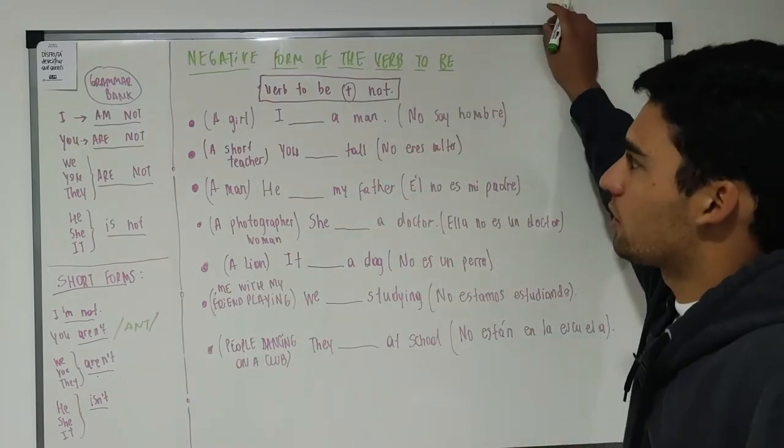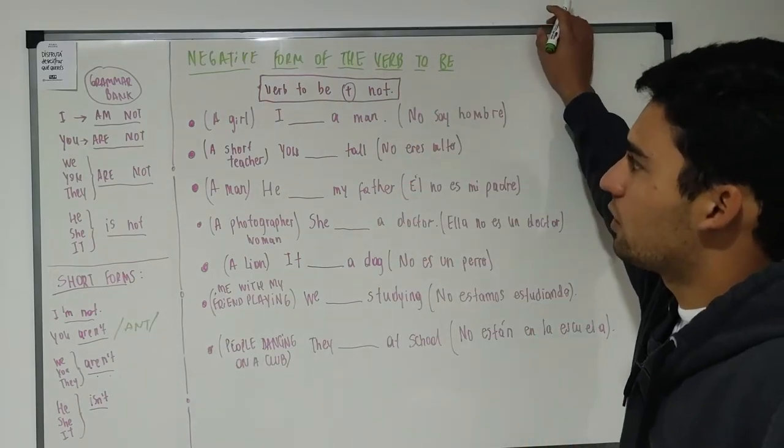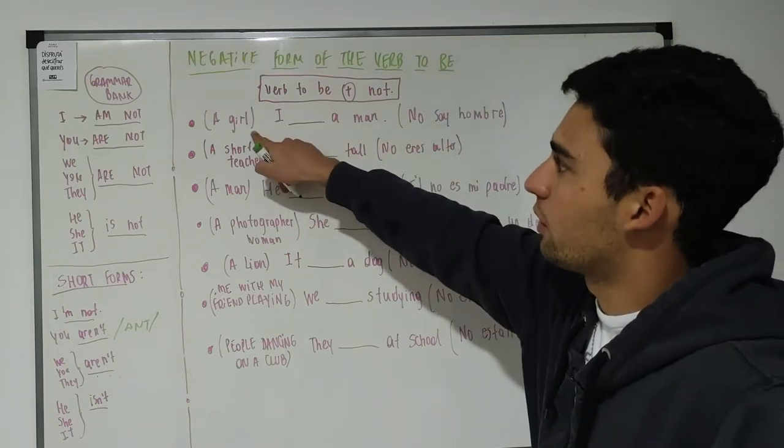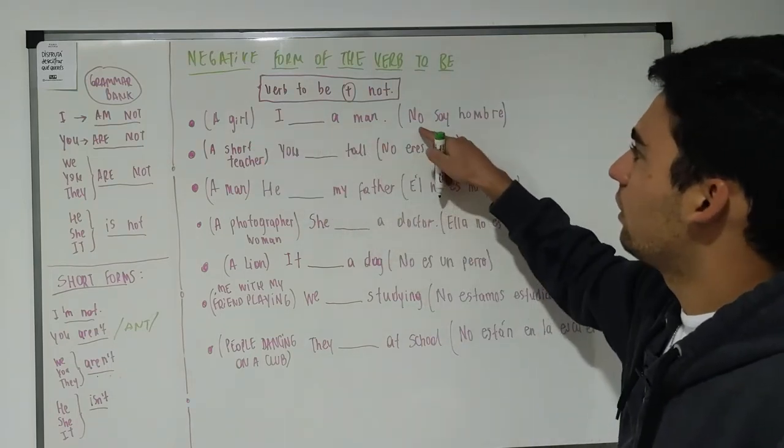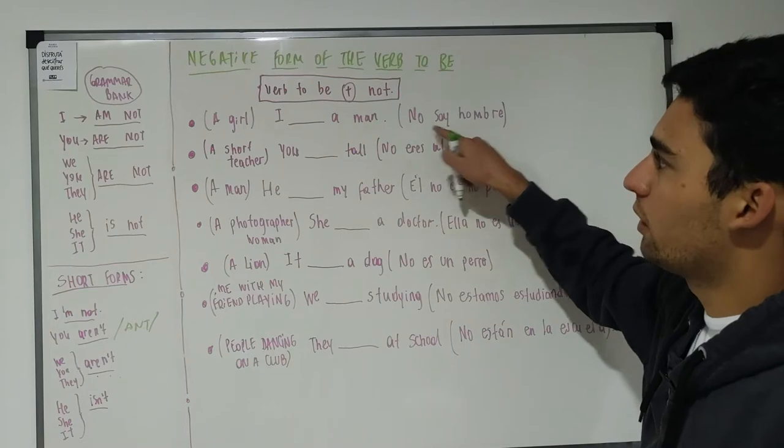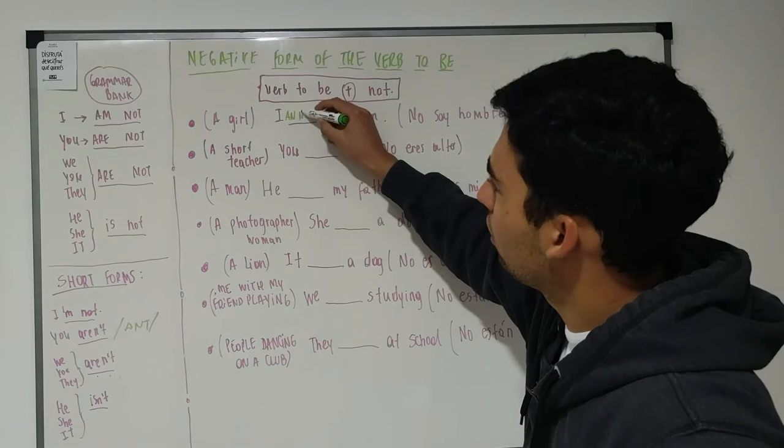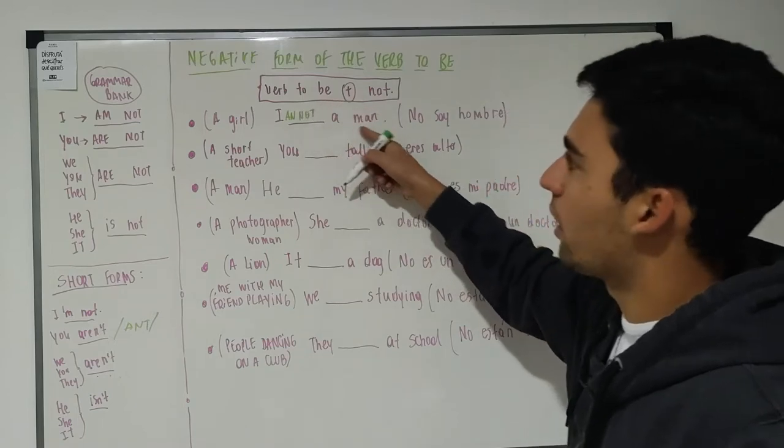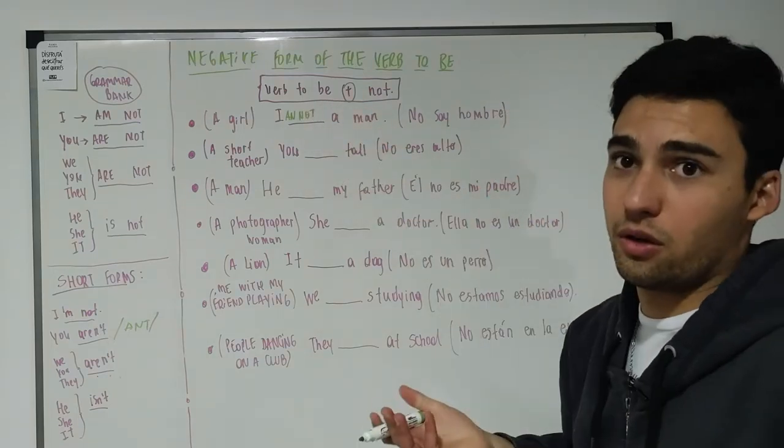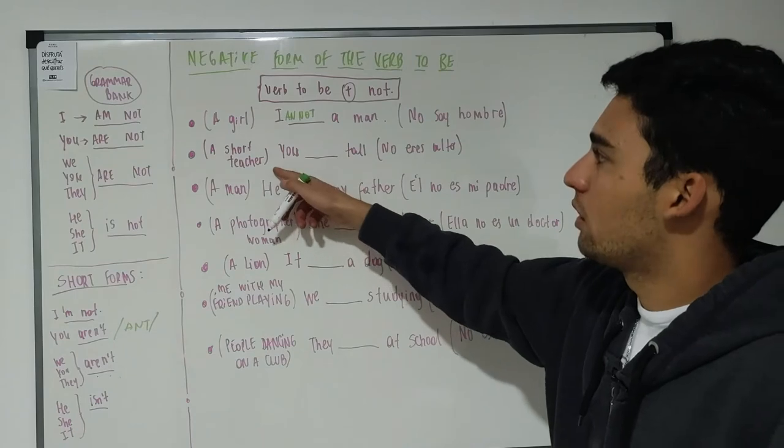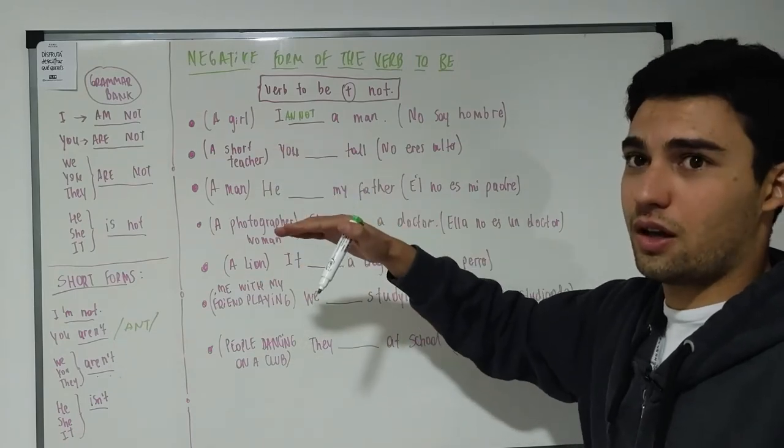Then we have here some examples. In the first case we have the example of a girl, a woman, and it says no soy hombre, so I am not a man. I'm not a man because I am a girl.